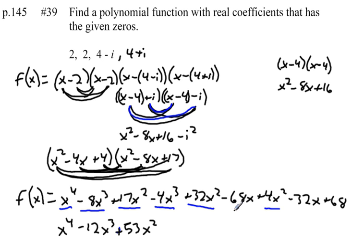Okay, now my x's have minus 68, minus 32. That should give me minus 100x. And last but not least, plus 68. So there's my function: f of x equals x to the 4th, minus 12x cubed, plus 53x squared, minus 100x, plus 68.